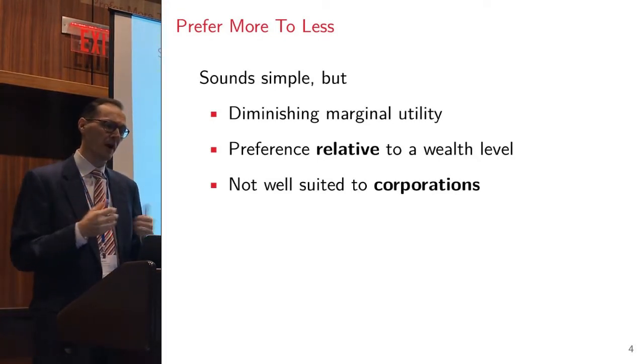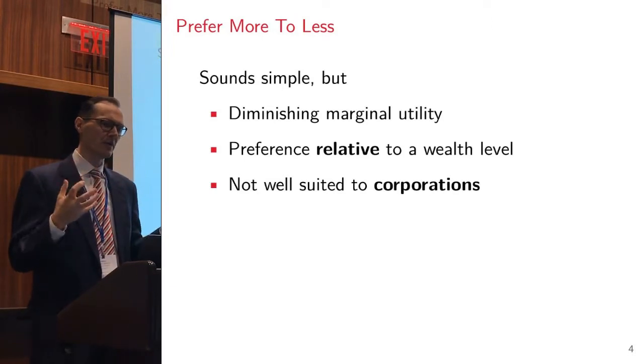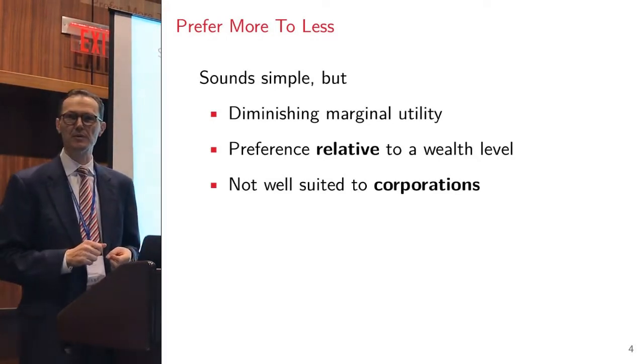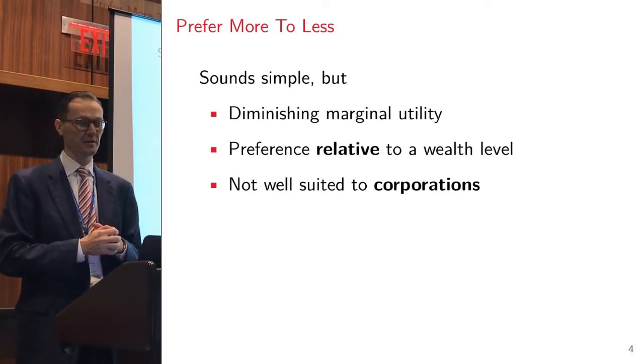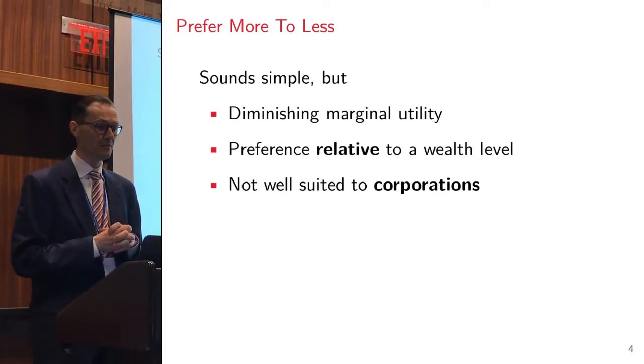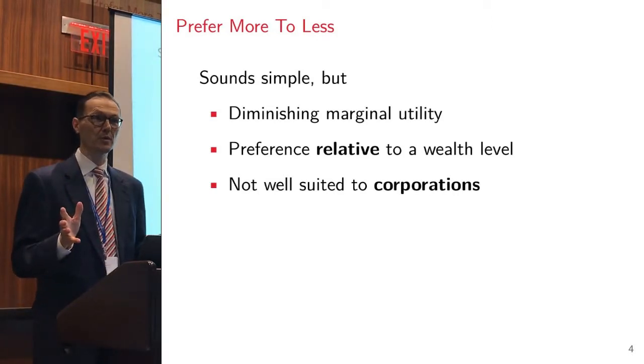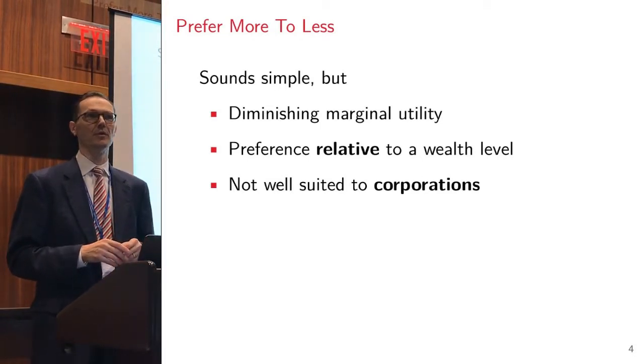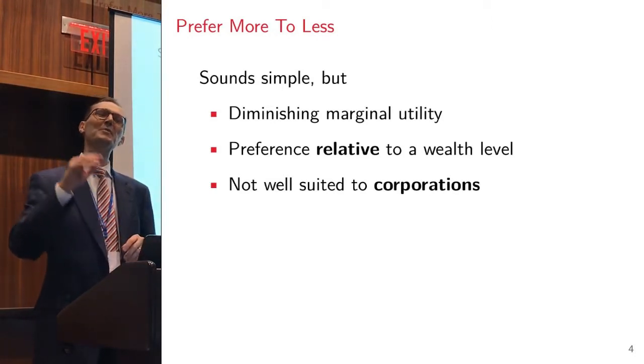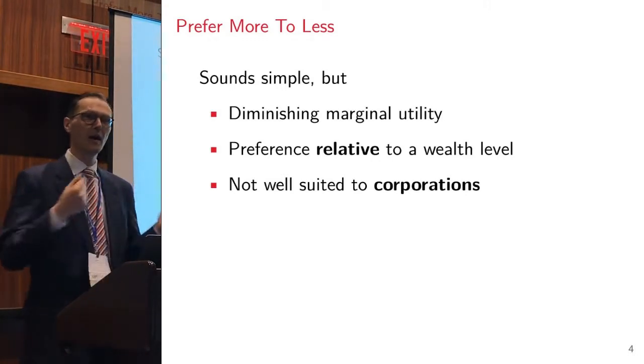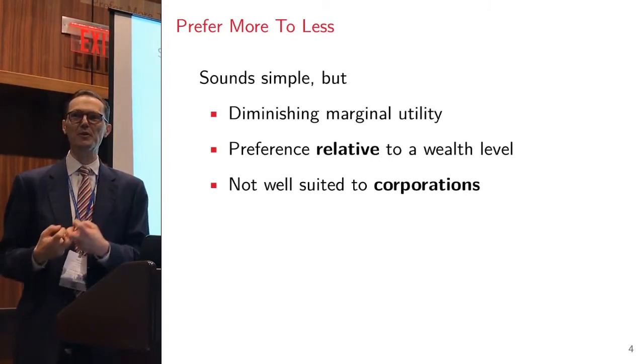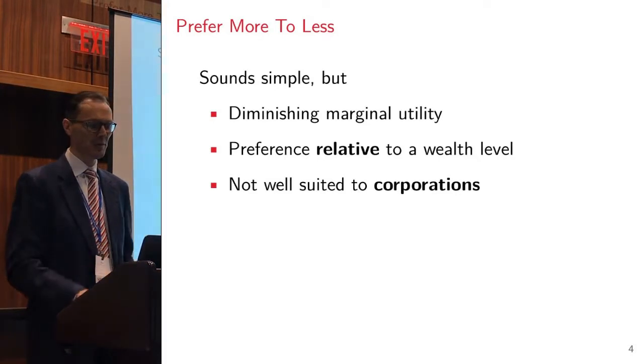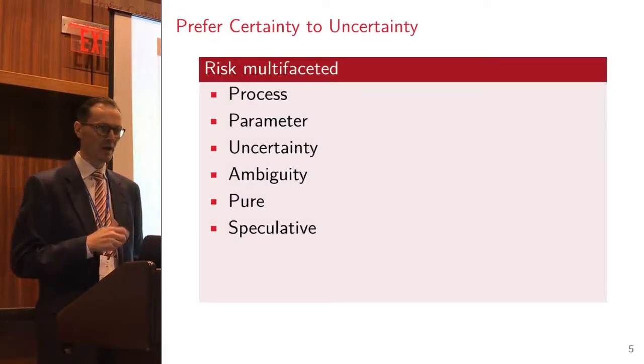As you think about utility, it's always relative to a current wealth level. If I am a millionaire, an extra thousand bucks is one thing, but if I've got no money at all, a thousand bucks might be the greatest thing since sliced bread. Companies don't have diminishing marginal utility. Companies don't say we're making enough profit now. There is no decreasing marginal utility for profit. You want to make as much profit as possible.